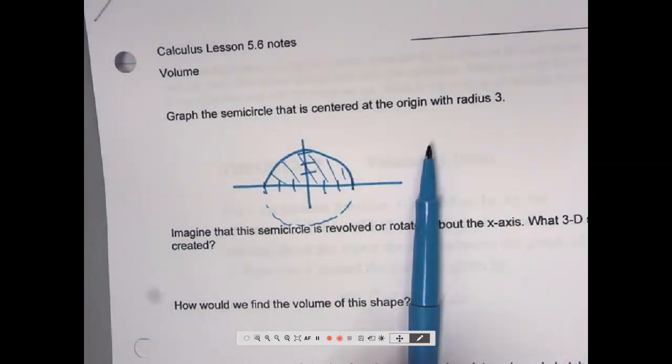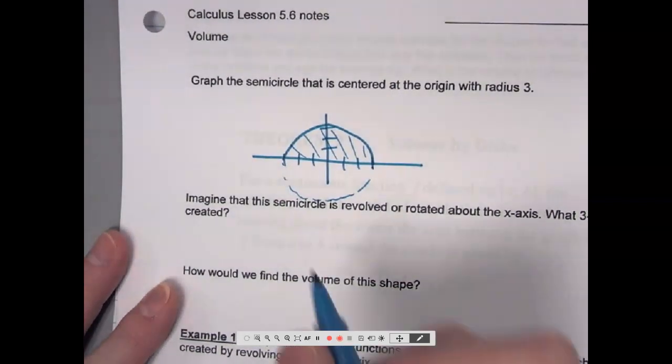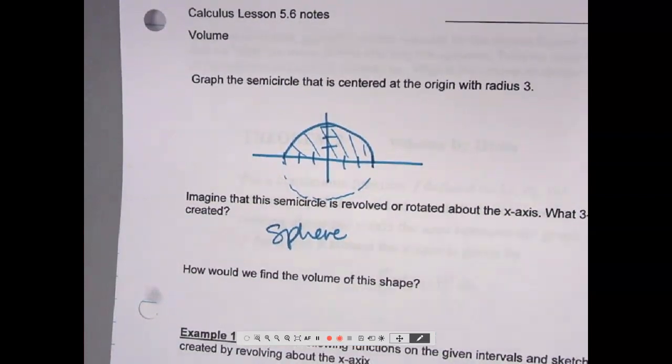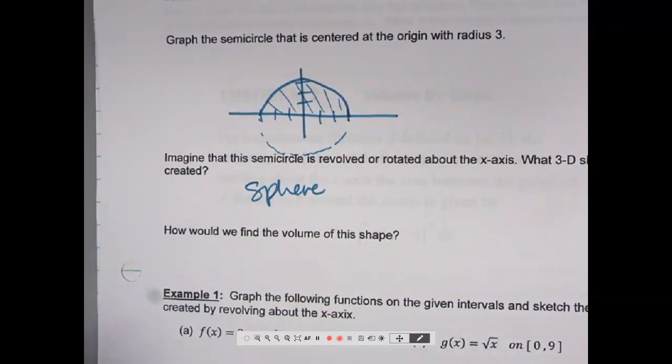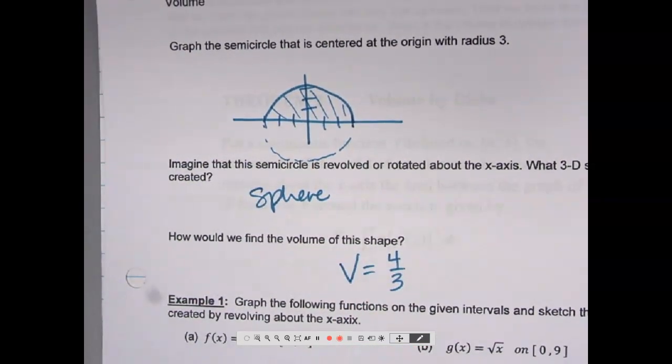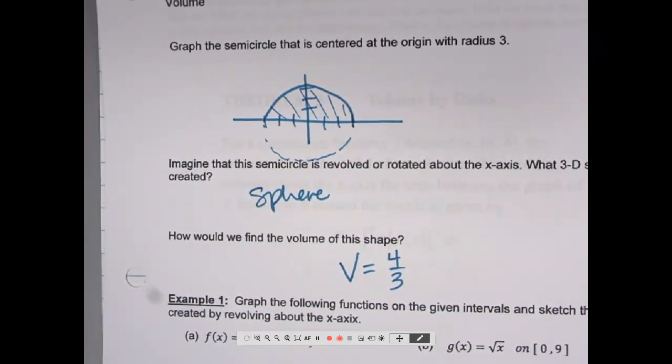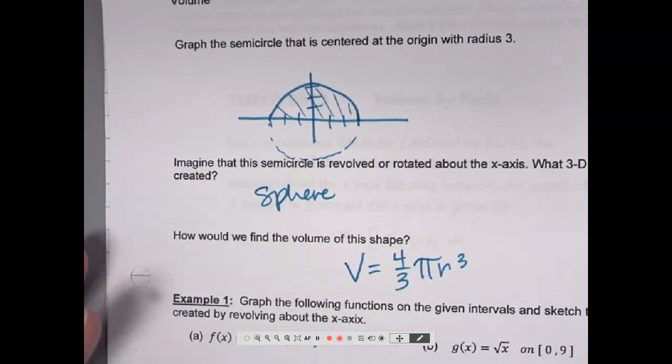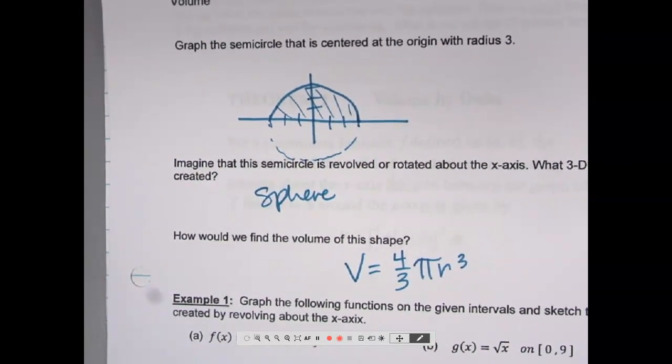That's what we're trying to imagine. So sphere. How do we find, put your brain to the test, what's our volume formula for a sphere? Four thirds is right. Pi r, volume is in what kind of units? Cube. Four thirds pi r cubed. That is our volume formula, just a geometric formula to find the volume of a sphere.